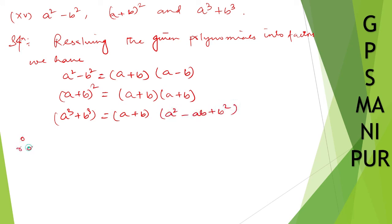So therefore, HCF is, take the common one, a plus b, a plus b, a plus b. So a plus b.